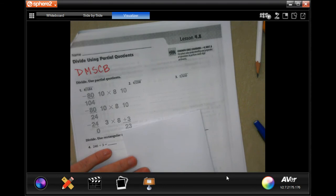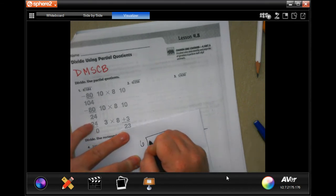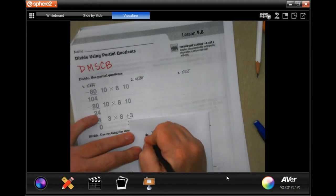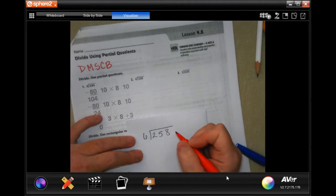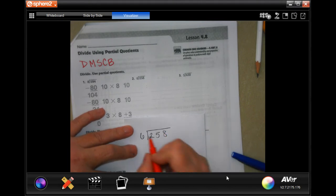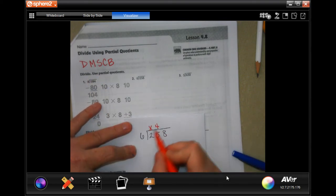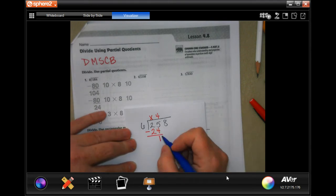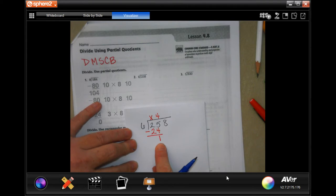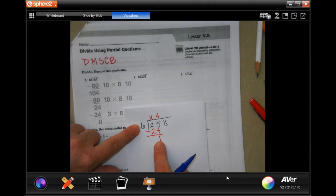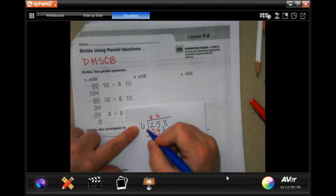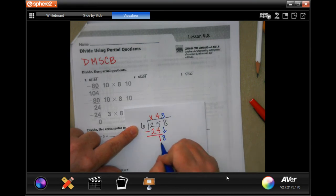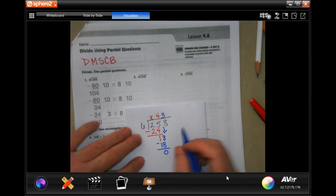On scrap paper I'm going to write down the problem. Six is not going to go into 2. Six will go into 25 four times—that's my division, multiplication. Four times 6 is 24. Subtract—that's my subtraction. I'm going to have 1 leftover. Now I'm going to do my check. Checking just means checking that whatever you have subtracted, your answer is smaller than the dividend. One is definitely smaller than 6. I'm going to bring down my 8. Six goes into 18 three times. Three times 6 is 18.